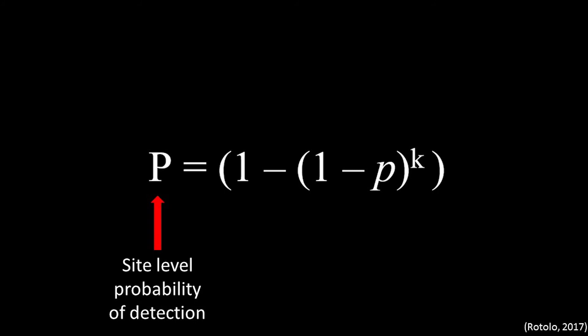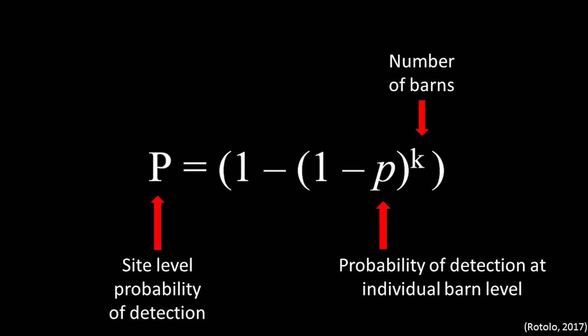In this equation, the capital P represents the probability of detecting infection at the site level. The lowercase p represents the probability of detecting infection in one barn. And k represents the number of barns in the site from which the samples were collected.